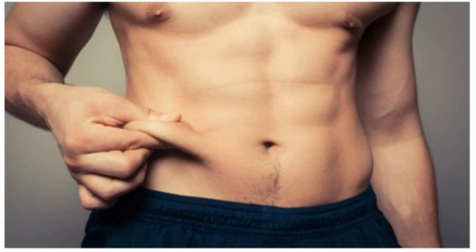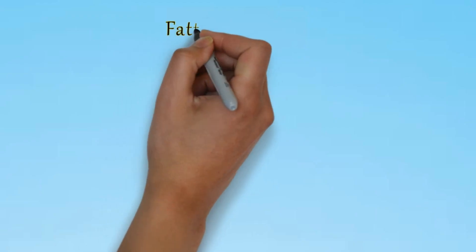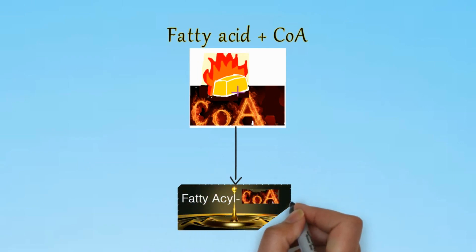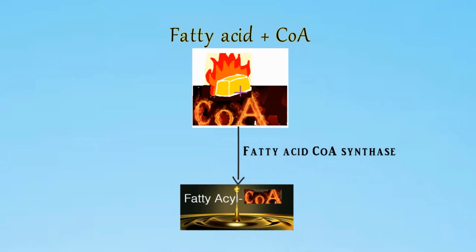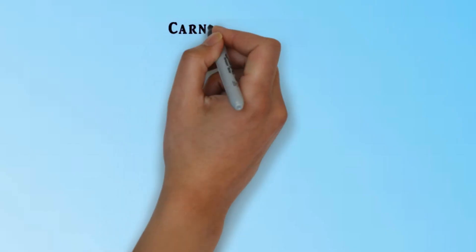The fatty acid is firstly bound to CoA to form fatty acyl CoA, using the fatty acid CoA synthase enzyme, and then crosses the outer mitochondrial membrane. Now I will explain what the carnitine shuttle is before expanding further.